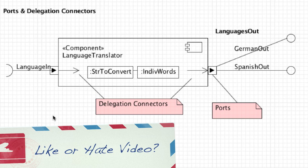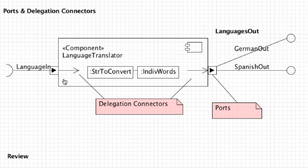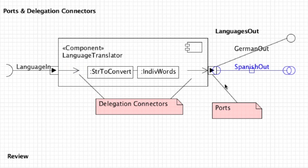Pretty much the only other thing you need to know about component diagrams is how to use delegation connectors. All you're going to do is show the flow of data through your component — language in connects via a delegation connector to an object which might break a string into individual words, and then shoot that information out in German as well as Spanish. That's pretty much every single thing you could ever want to know about component diagrams.